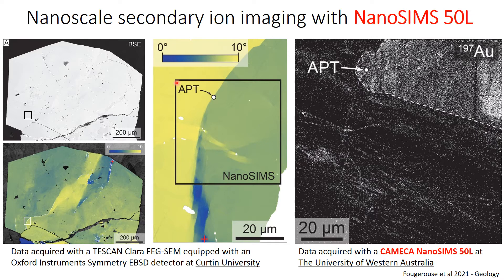So we performed some nanoSIMS analysis in this region. We used the CAMECA nanoSIMS 50L at the University of Western Australia. What we see on the gold map from the nanoSIMS data is that we have a domain on the top right of this map which is enriched in gold. Gold is heterogeneous in this domain — it has some oscillatory zones. These zones are very typical of pyrites; this is something which is commonly observed.